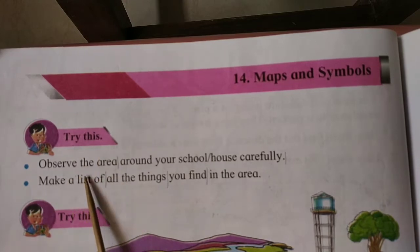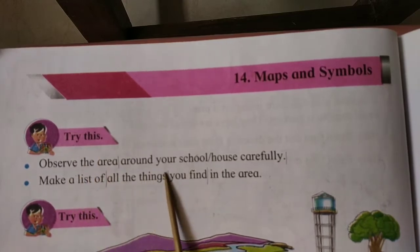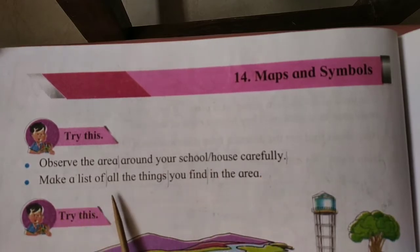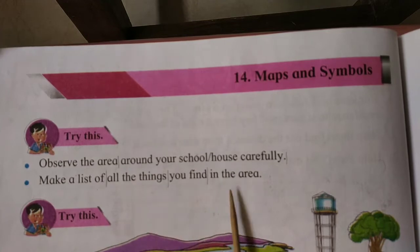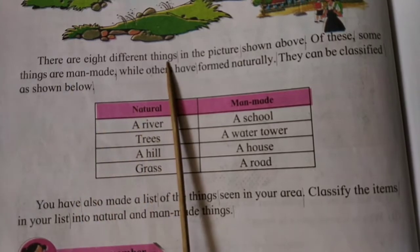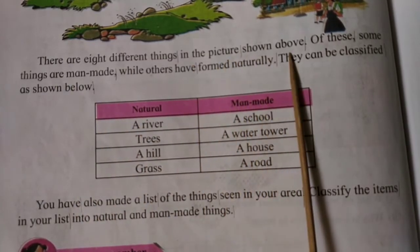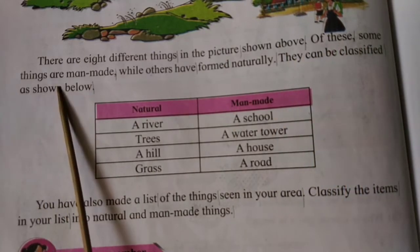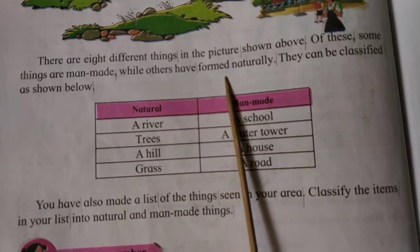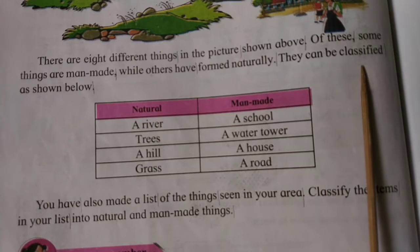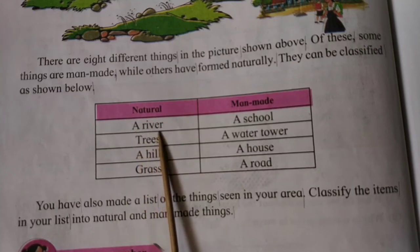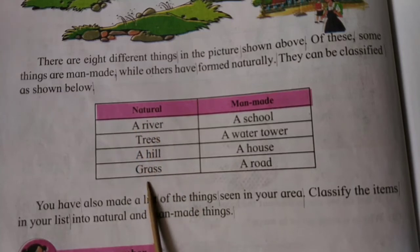Try this. Observe the area around your school house carefully. Make a list of all the things you find in the area. There are eight different things in the picture shown above. Of these, some things are man-made while others have formed naturally. They can be classified as shown below. Natural: a river, trees, a hill, grass.